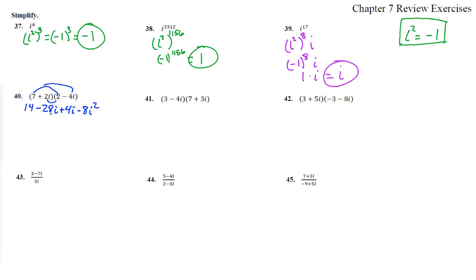Let's put these two i's together. And this becomes negative. 14 minus 24i. And then this is minus 8. Remember, i squared is a negative 1.